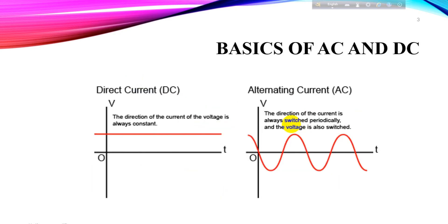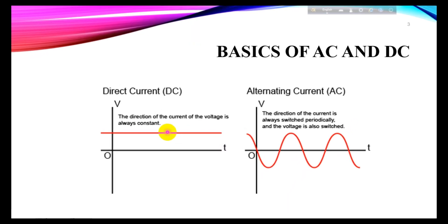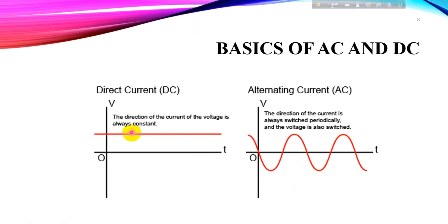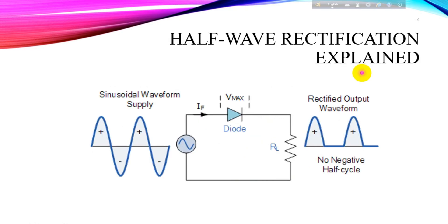Let's discuss the basics of AC and DC. Before we delve into half wave rectification, let's quickly refresh our memory. AC is a type of electrical current that periodically changes direction, creating a waveform that alternates between positive and negative values. On the other hand, DC is a constant flow of electrons in one direction, maintaining a steady voltage level.